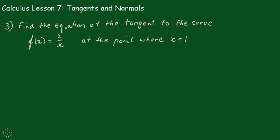Alright, in question 3, we have to find the equation of the tangent of the curve f(x) = 2/x at the point where x equals 1. Now, at x equals 1, we have f(1), which is simply 2 over 1, which is 2.